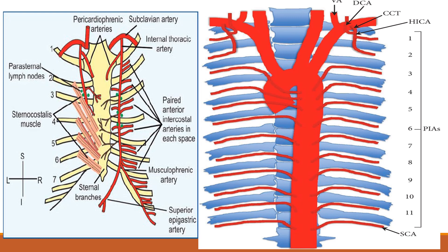In the first two spaces, both the anterior and posterior intercostal arteries are from the high-pressure zone, so there is no significant turbulence around the region of anastomosis — both are of the same pressure. From the third intercostal space, however, the anterior and posterior intercostal arteries anastomose around the anterior axillary line.